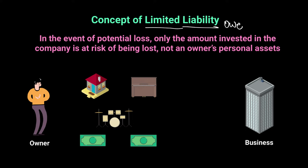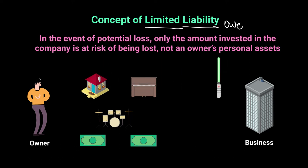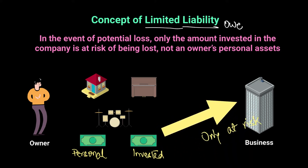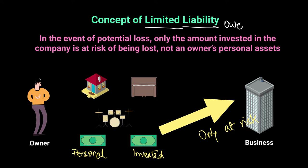That concept is known as limited liability: in the event of a potential loss, only the amount invested in the company is at risk of being lost, not the owner's personal assets. For example, an owner has his own home, a piano, a drum kit, and personal savings. Some of that money is invested in the business. In the case of limited liability, only the amount invested is at risk; the rest — the house, piano, and personal savings — remains with the owner.